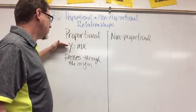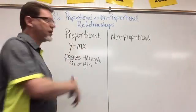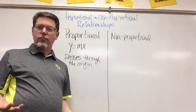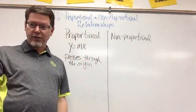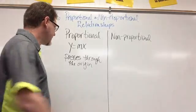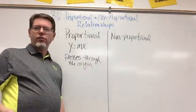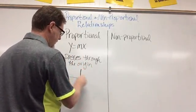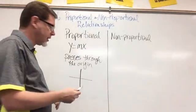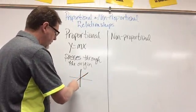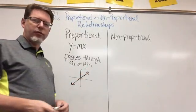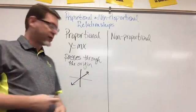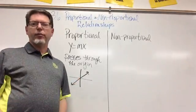So any time you see an equation that just says y equals mx, there's no plus or minus any other number, then you know that's a proportional relationship, just like direct variation, which is proportional. And it passes through the origin. So if I have a graph, I know that whatever line I'm going to have is going to pass through the origin, and that's going to be a proportional relationship. So any line that passes through the origin creates a proportional relationship.